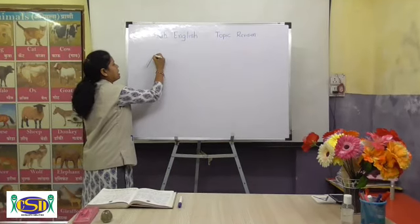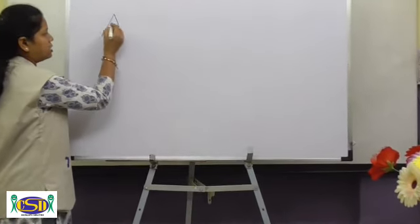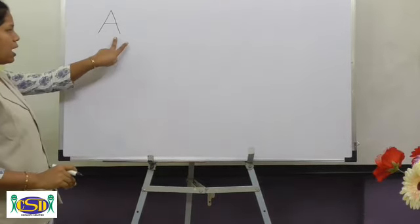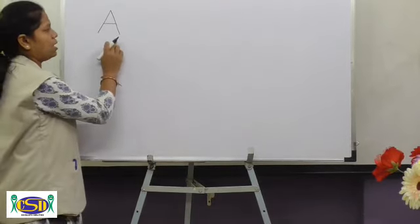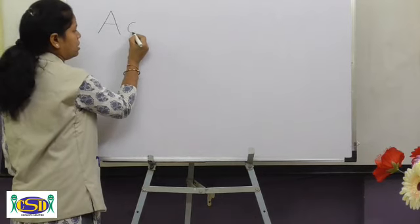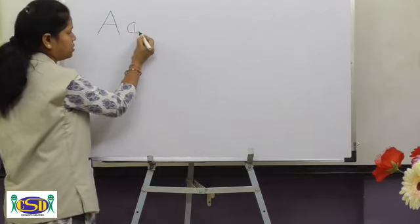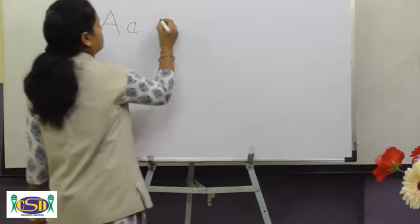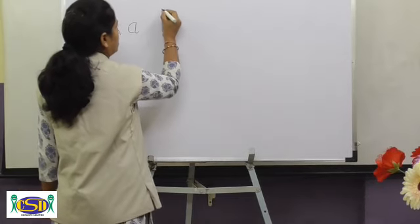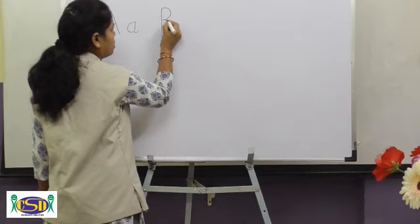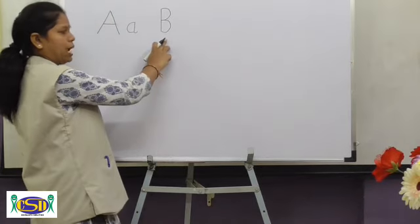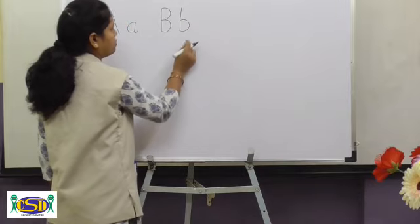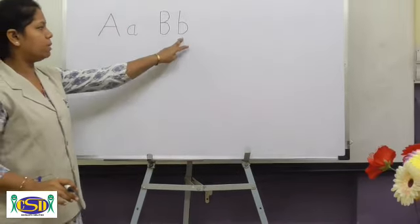Right slant line, left slant line, slipping line — capital A. Right curl, right hook — small a. Standing line, left curl, left curl — capital B. Standing line, left curl — small b.